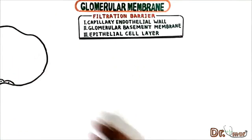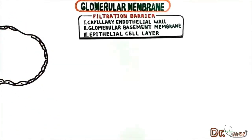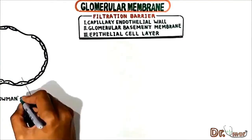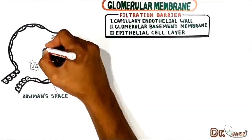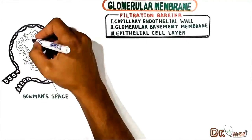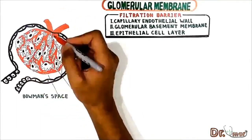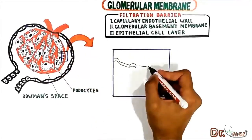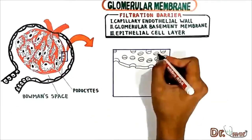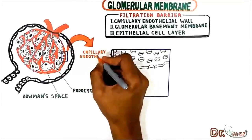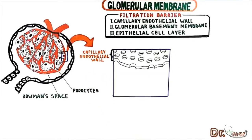The Bowman's space surrounds the glomerulus, and the cells called podocytes wrap around the capillaries of the glomerulus. The first filtration barrier is the capillary endothelial wall with fenestrations — it is perforated by thousands of small holes, therefore this type of capillary is called a fenestrated capillary.